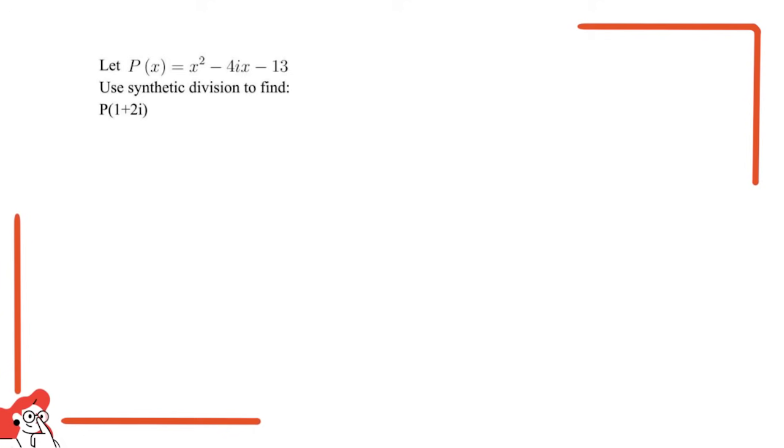So first of all we need to know what this means or what this question actually means. We need to... so 1 plus 2i, this has the meaning that P(x) is divided by x minus (1 plus 2i).